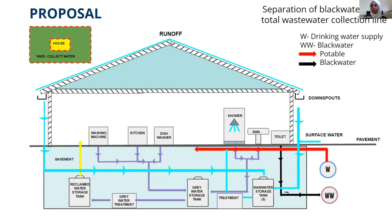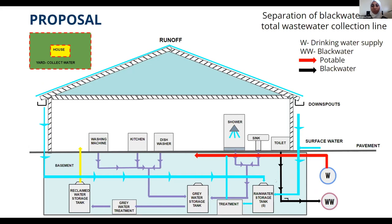For our proposal, we have decided to reuse all graywater for toilet flushing. In addition to this, we would like to collect precipitation from the roof via the gutters, as well as the surrounding surface area, as shown in the illustration and box diagram. In our box diagram, the cyan line represents the roof and gutter collection. The black water line is only receiving from the toilet. The lavender line is the water collected from sinks, showers, dishwashing, and washing machines, which is then treated and pumped back to the toilet for flushing.